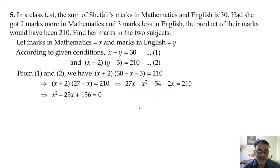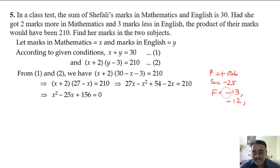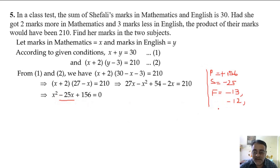Now we need to factorize x squared minus 25x plus 156 equals zero. The product is 156 and the sum is minus 25. We need two numbers whose product is 156 and sum is minus 25. Those numbers are 12 and 13, and both will be negative because the sum is negative.